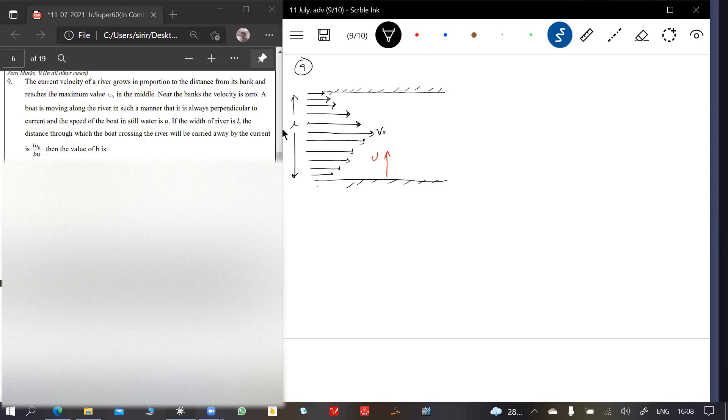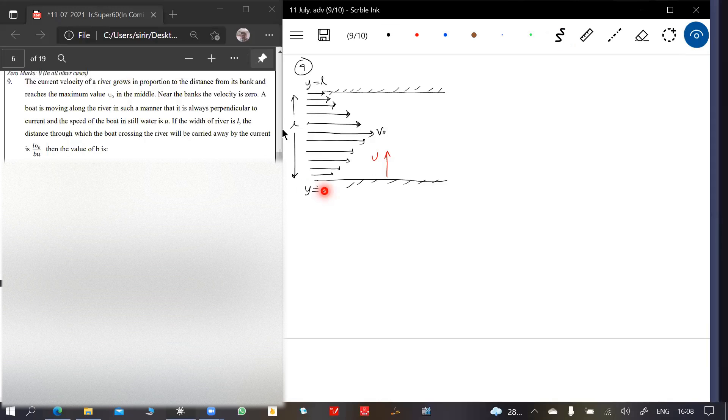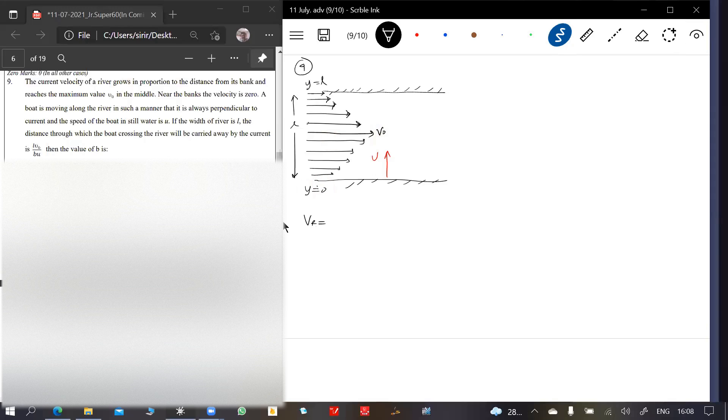Along Y axis it will vary. So I want that equation. At the middle it is Y equal to L by 2. Let me do one thing: Y equal to 0, this is Y equal to L. At Y equal to 0, what is the velocity? V0. At Y equal to L by 2 it should become V0. So velocity of river current, how we have to write this equation is very important.